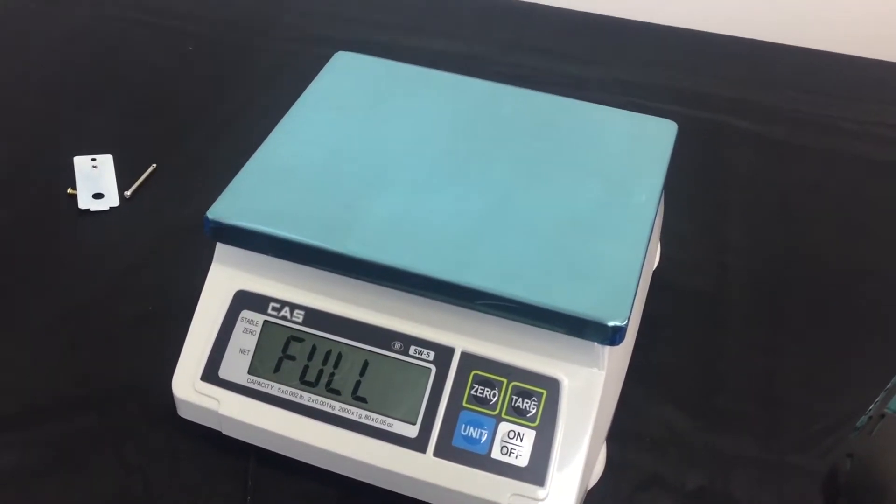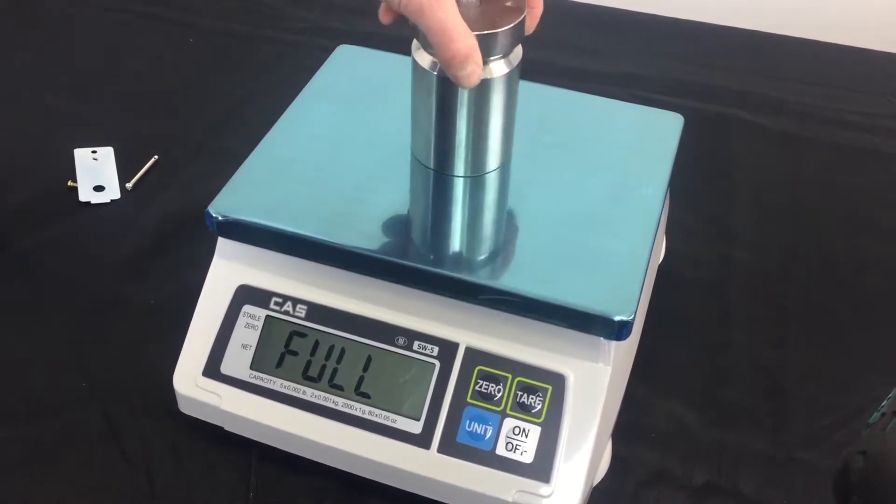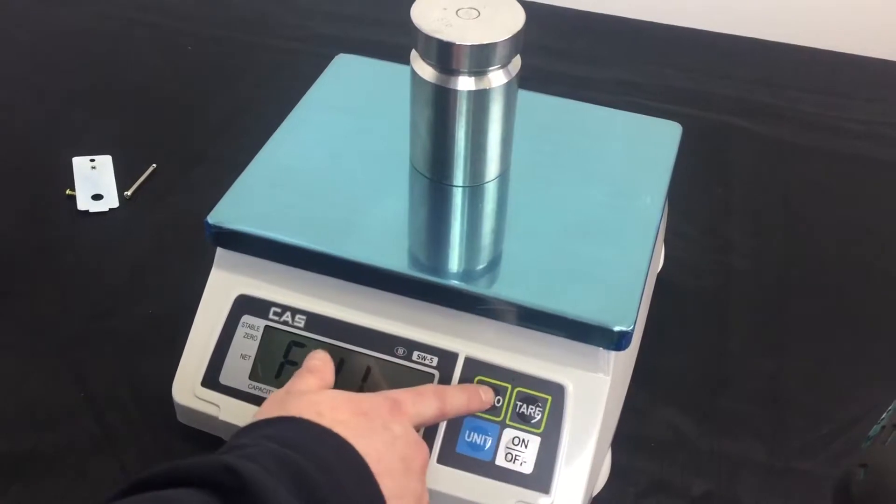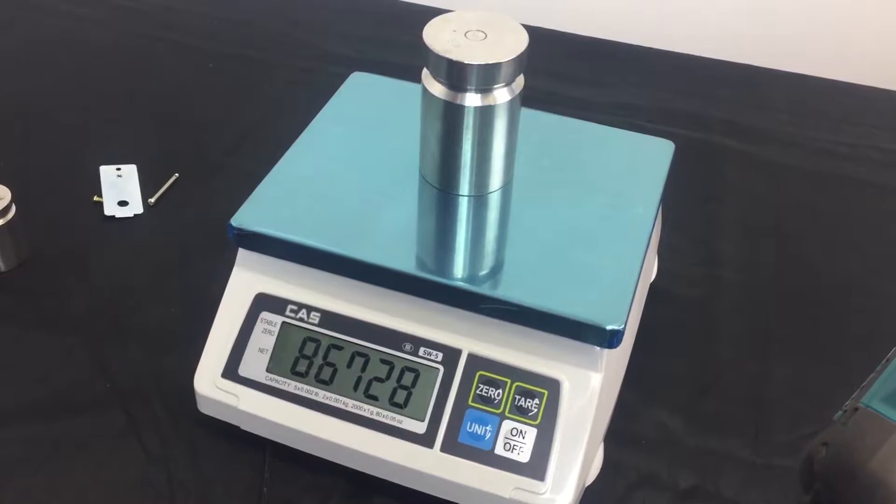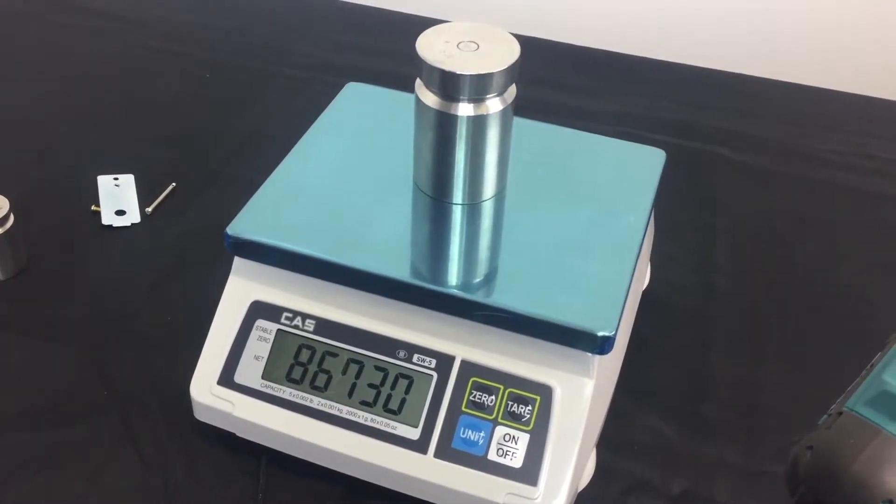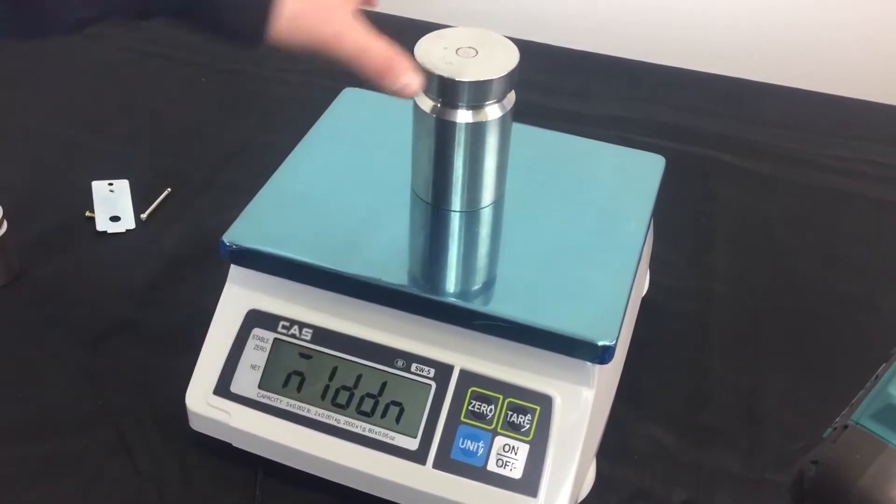Now, we remove the two pounds. We place our full capacity on, which is five pounds for this particular model, and then we press the zero key. You want to see your raw counts bounce around a bit, which is normal, as I said. Wait till it stabilizes, and it'll say ND down.